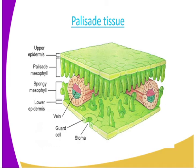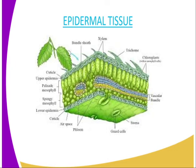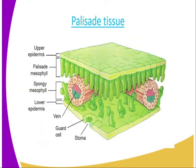We are going to have our second tissue, which is the palisade tissue. As you can see from our diagram, that is the palisade tissue. We have the upper epidermis, the palisade mesophyll, the spongy mesophyll, and the lower epidermis. We have the veins, the guard cells, and the stoma. As we have seen earlier, the guard cells are attached to the stoma, whereby they regulate the opening and closing of the stomata.